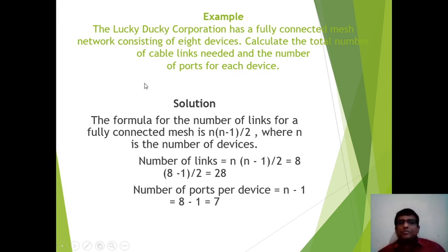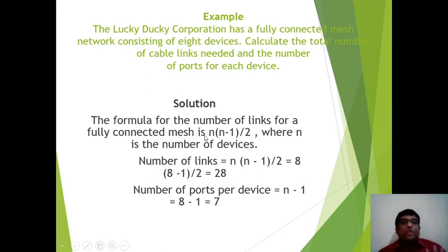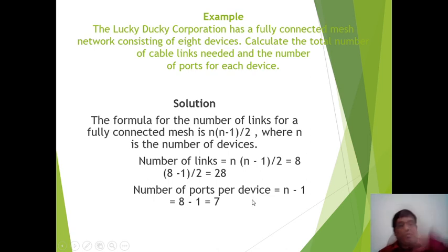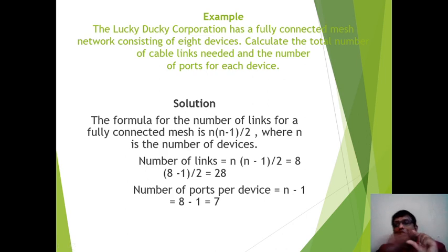For example, a corporation has a fully connected mesh topology consisting of 8 devices. To calculate number of cable links: N(N-1)/2 = 8×7/2 = 28 links. Number of ports per device = N-1 = 8-1 = 7, since each of the 8 terminals must connect to all other 7 terminals. So 28 links and 7 ports per device — that's why Mesh Topology is too expensive.